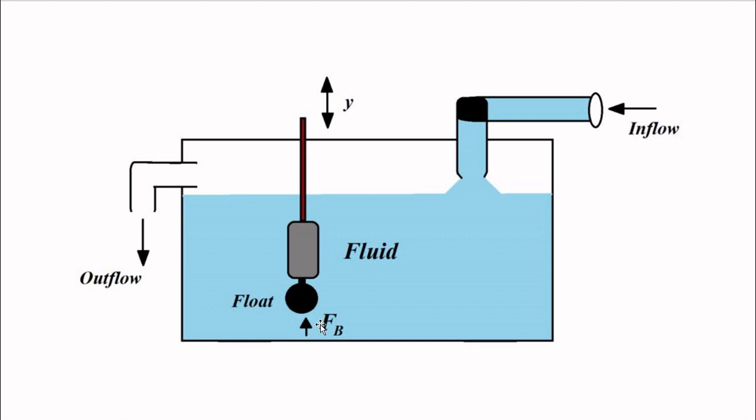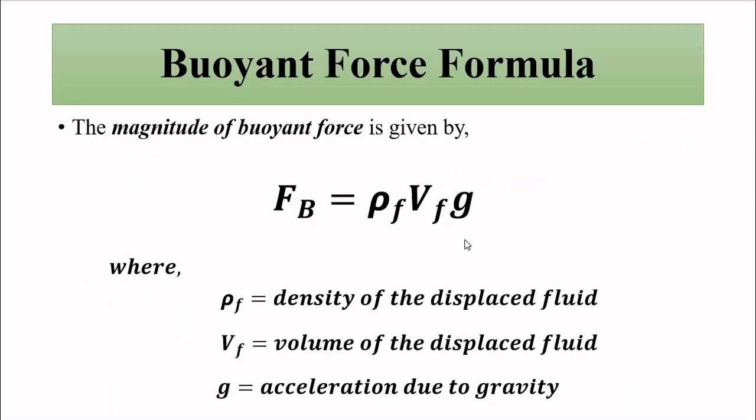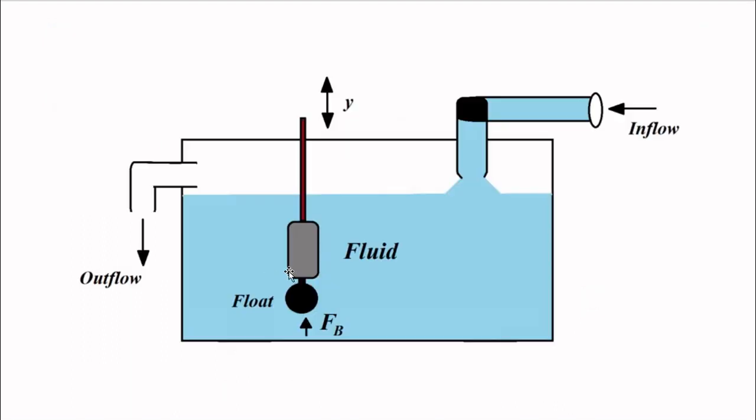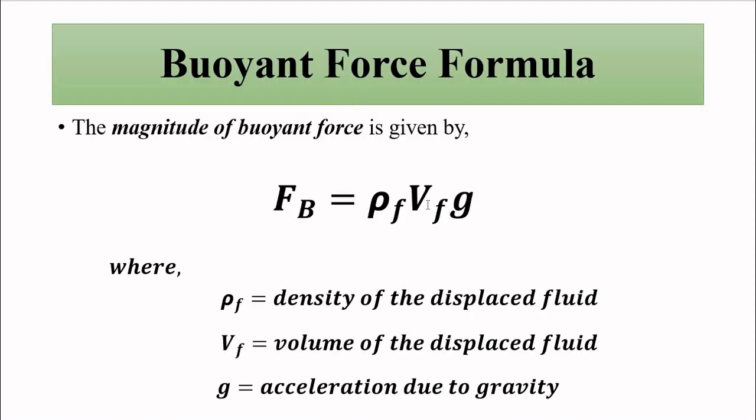This buoyant force is a function of density, it is dependent on the density of the fluid. This buoyant force is given by mass into acceleration due to gravity, mass of the fluid which is displaced by this float. Here mass is density multiplied with volume, where ρ_f is the density of the displaced fluid, V_f is the volume of the displaced fluid, g is acceleration due to gravity.